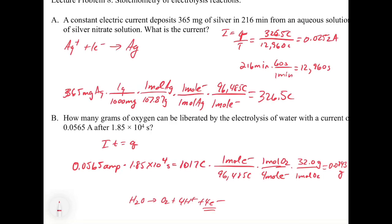This shows you how to handle electrolysis both in the forward direction — starting from a current and time to find the amount of product made — and in the reverse direction — starting from the amount of product made to calculate the current over a given period of time. This is it for chapter 19. We're now moving into chapter 20, which will look at something completely different: nuclear reactions.